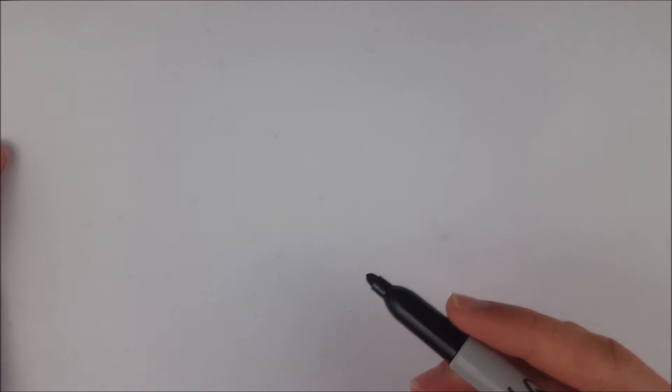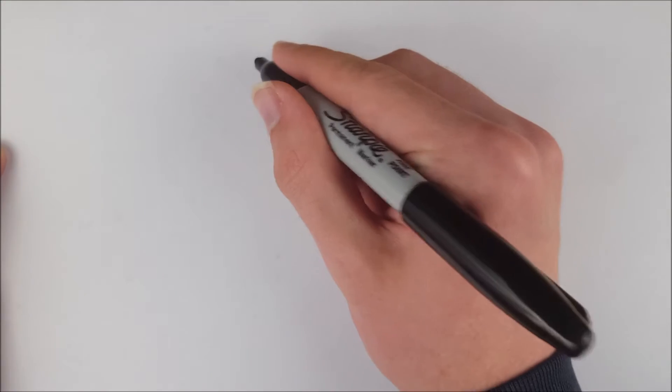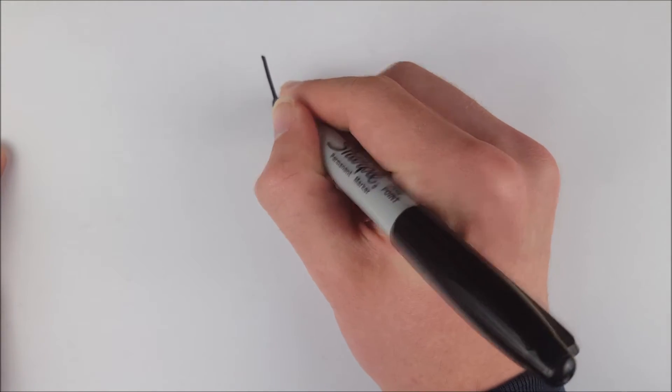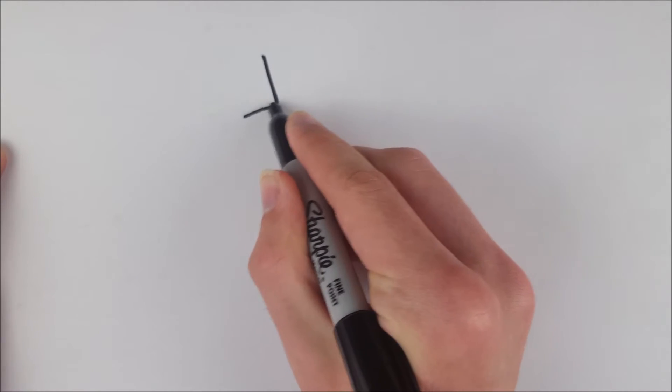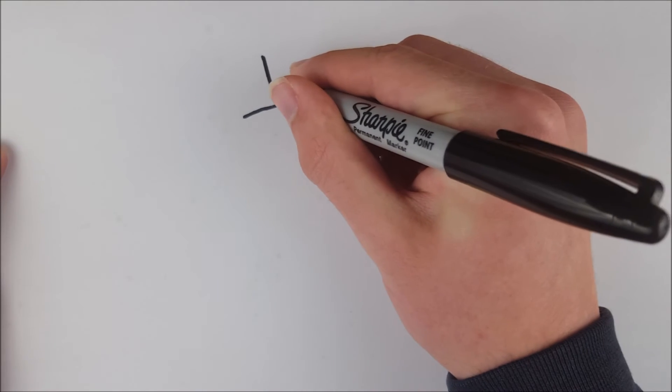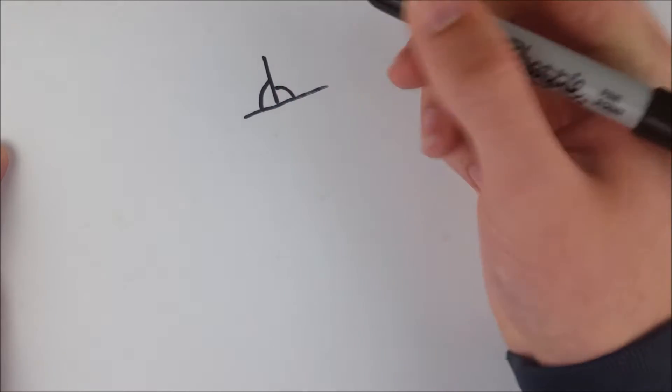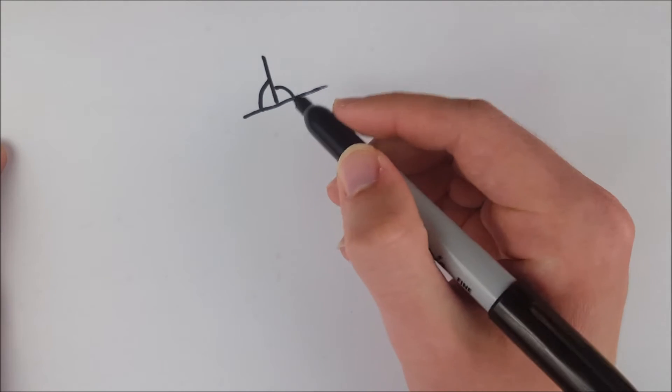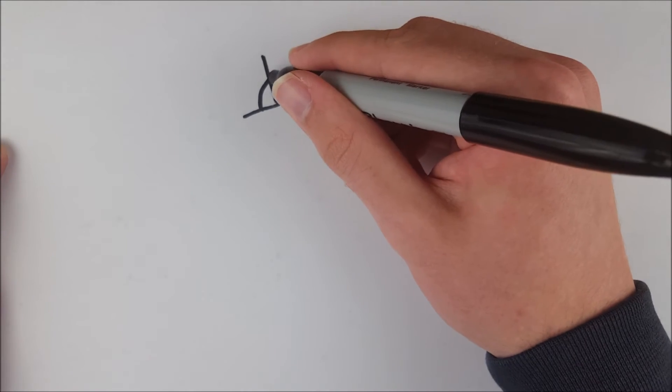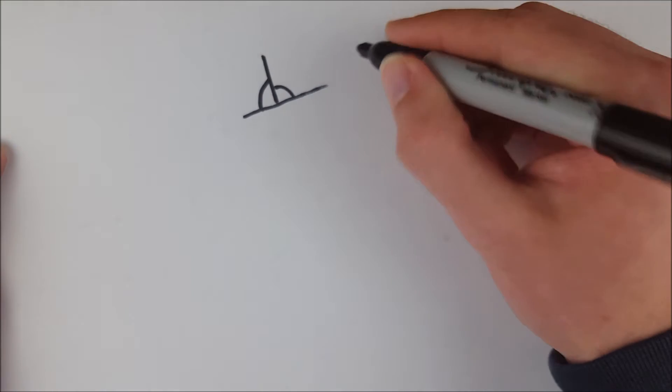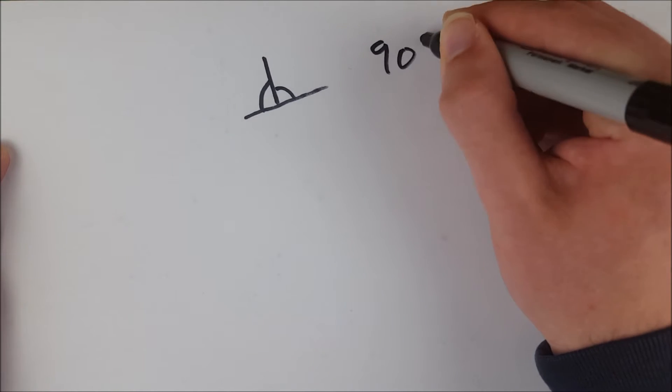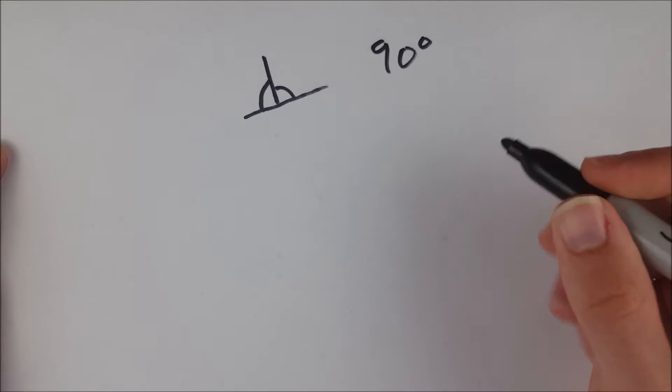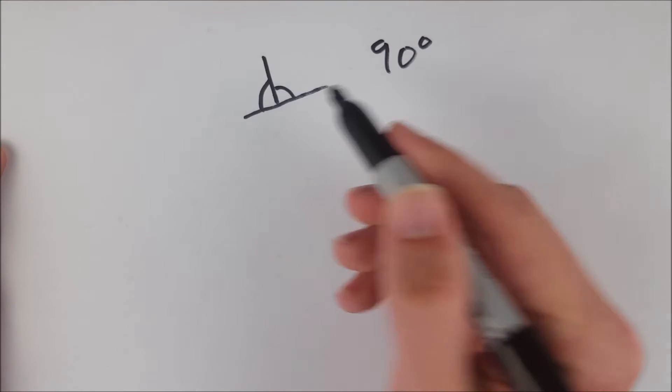In today's video we're going over a quick proof that congruent supplementary angles have to be equal to 90 degrees each. So if you have a situation where you know you've got two congruent angles, something like this, you know that this angle is congruent to this angle, and you know that these angles are supplementary, then from that you can conclude that these both have to be right angles that of course have a measure of 90 degrees, which would mean that this line is perpendicular to this line.